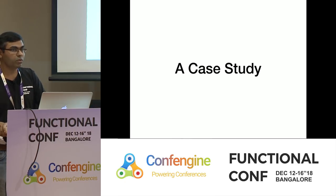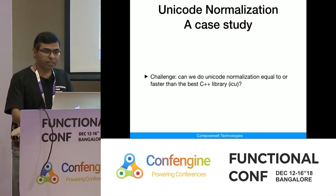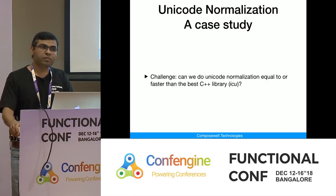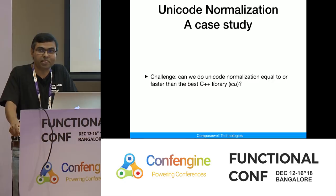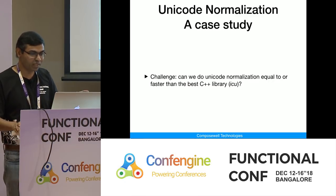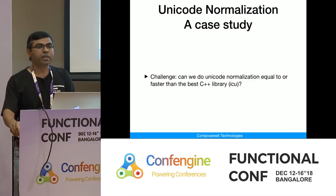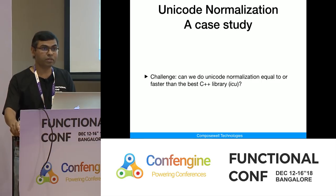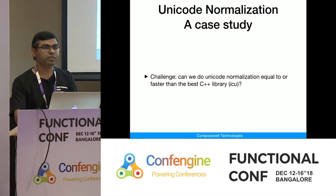Let's take a look at a case study. I wrote a library called Unicode Transforms in response to an issue in the Haskell build tool Stack. I think all Haskellers in their lifetime try to prove that Haskell can perform as well as C. But this one is not a toy program — this is a real-life useful library. I compared it to ICU, the International Components for Unicode library, which does Unicode normalization.